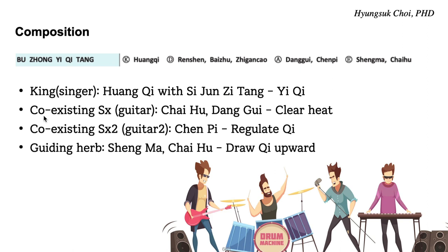There are co-existing symptoms. First: fever — Li Gao invented this formula mostly for fever, and Cai Hu and Danggui clear heat. Second: a secondary symptom, which is dyspepsia — Chen Pi regulates qi. So guitar one, guitar two. And the guiding herbs raise qi upward: Shang Ma and Cai Hu throw qi upward. So many herbs play each role in this beautiful formula.